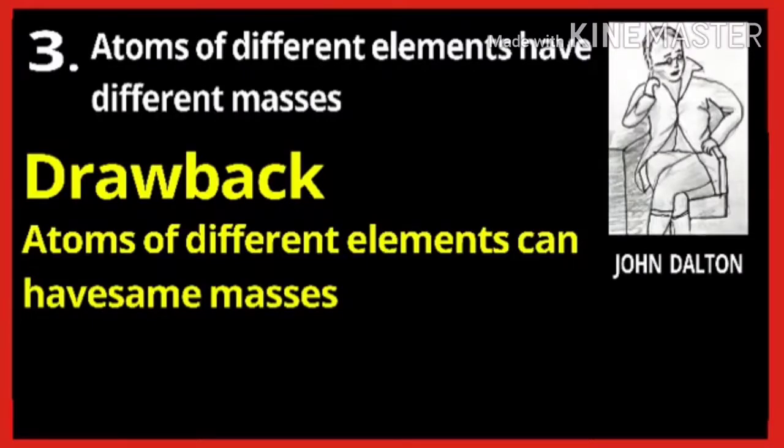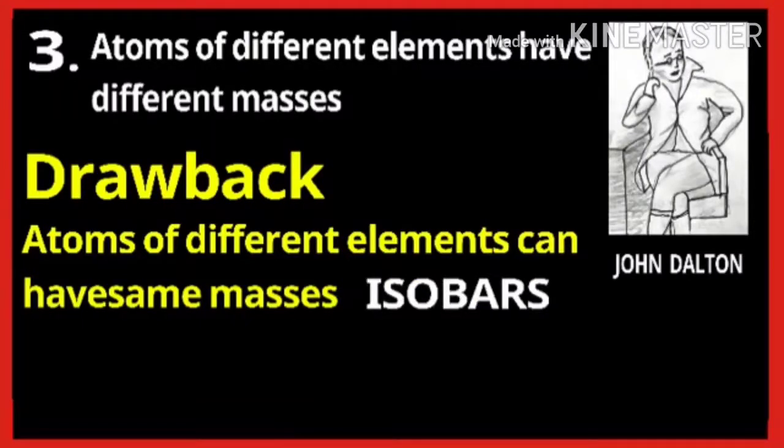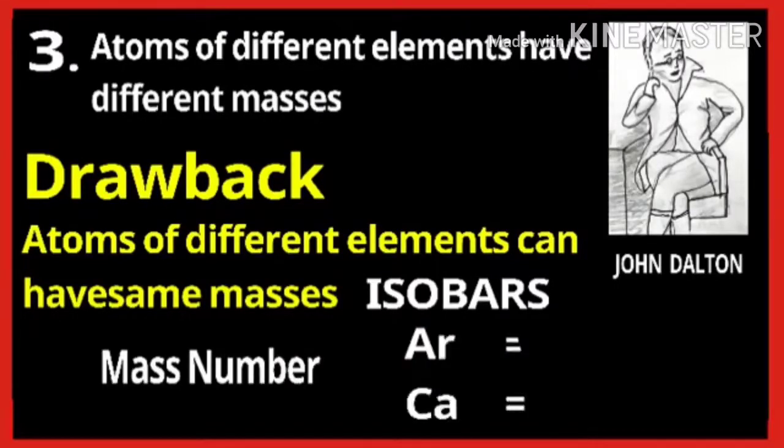In this universe, there are such atoms that exist. For example, calcium and argon. These both atoms are isobars. They are elements having the same mass number, that is 40, but the atomic numbers are different. For argon, the atomic number is 18, and for calcium, the atomic number is 20.